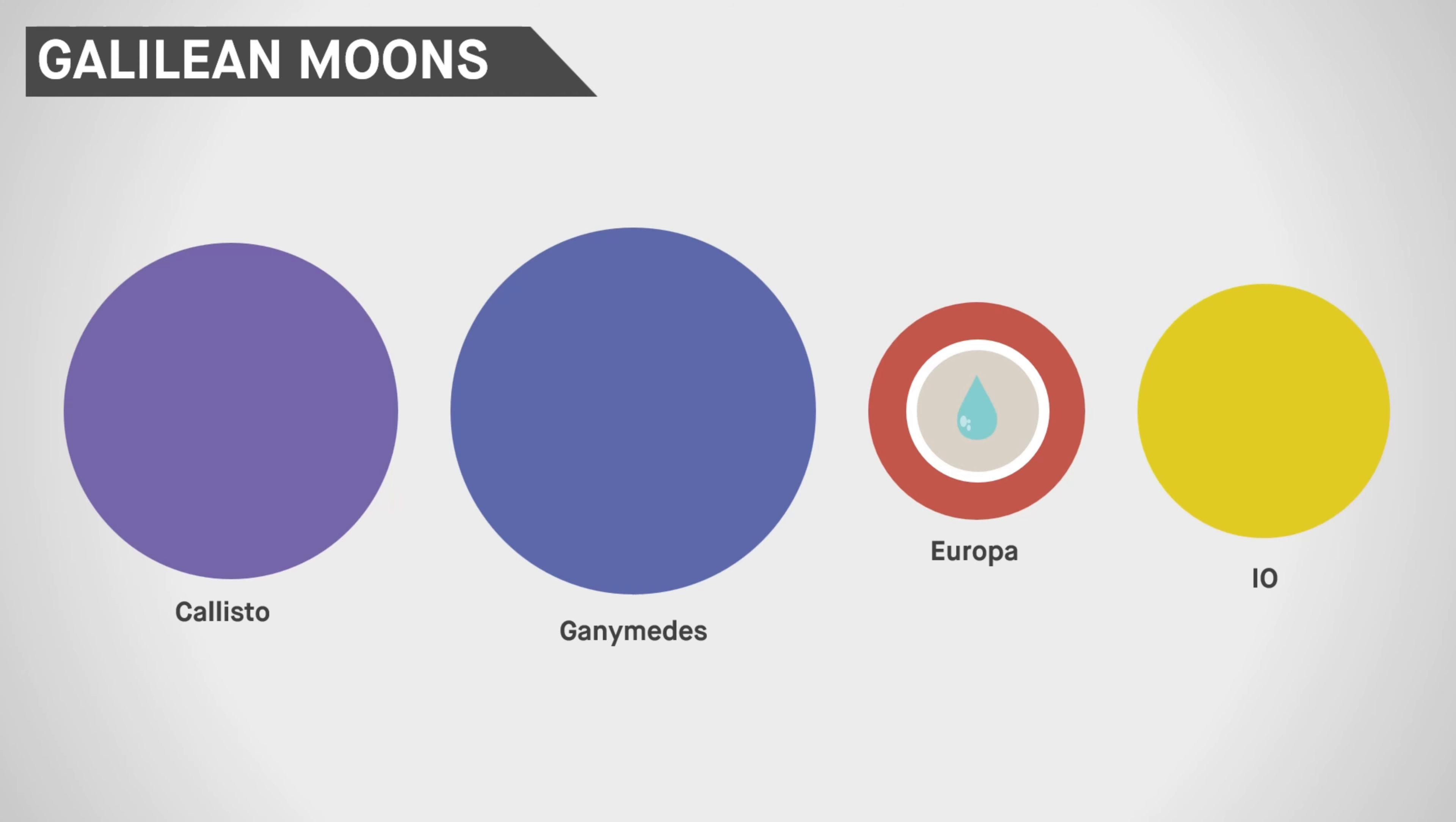Ganymede, the largest moon in the solar system, harbors its own magnetic field, a testament to its complex internal structure.